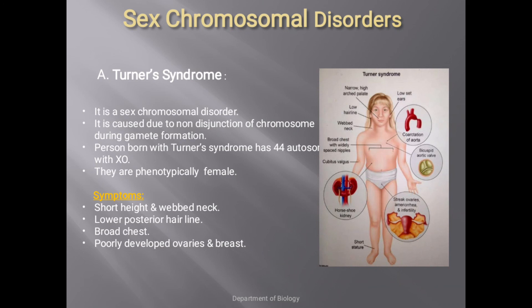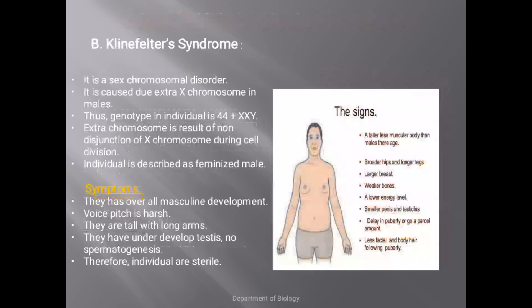The next sex chromosomal disorder is Turner syndrome. It is caused due to non-disjunction of chromosomes during gamete formation. Persons born with Turner syndrome have 44 autosomes with XO sex chromosomes and are phenotypically female. Symptoms include short height, webbed neck, lower posterior hairline, broad chest, and poorly developed ovaries and breasts.